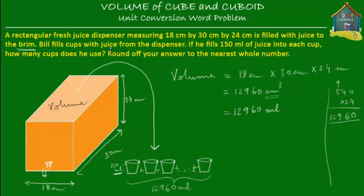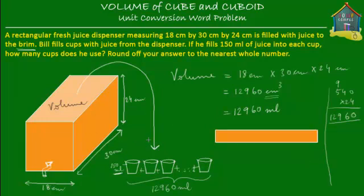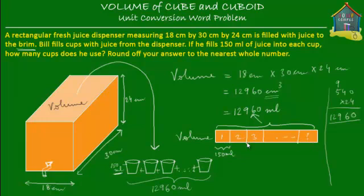Now what we have to find out is how many cups Bill will use to fill up every single drop of juice into the cups. This is the model for the volume of juice inside the dispenser, which is equal to 12,960 ml. This is distributed over a few cups, and each cup has got 150 ml of juice. So each of these is 150 ml. All we have to do now is find out how many of these smaller blocks there are. We simply divide 12,960 ml by 150 ml.